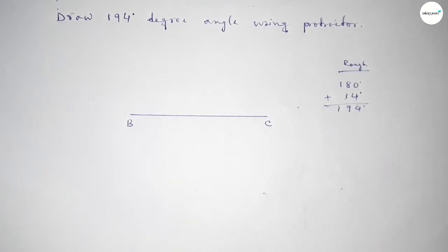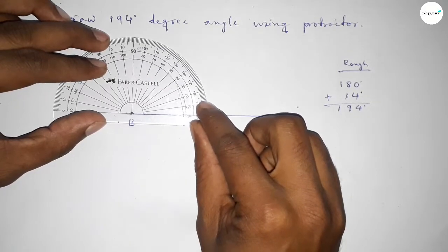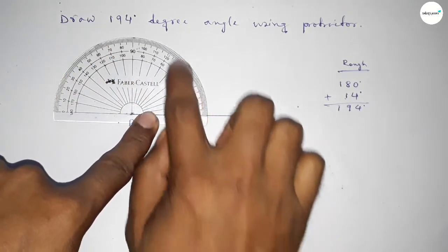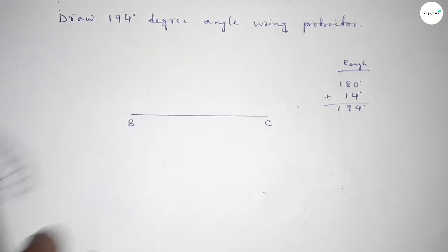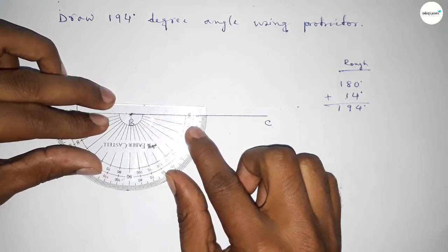First, we have to count 180-degree angle. So putting the protractor on point B perfectly, then counting 180 degrees. This is 180 degrees, plus putting the protractor on point B this way and counting extra 14 degrees.